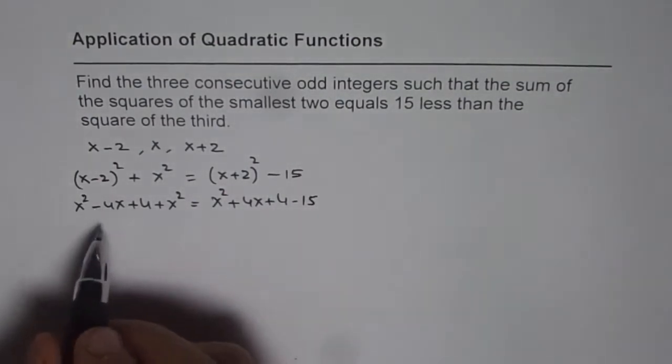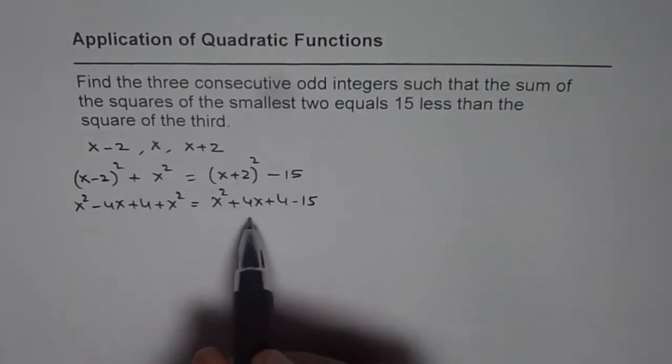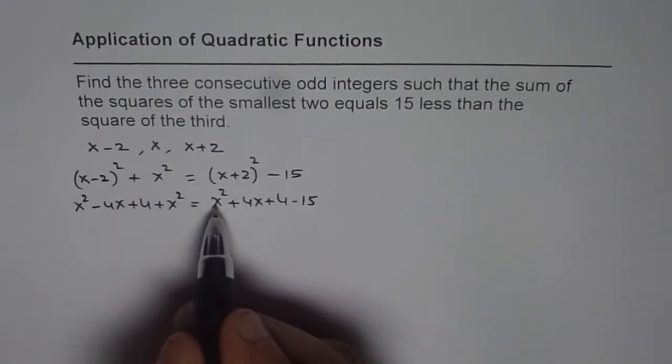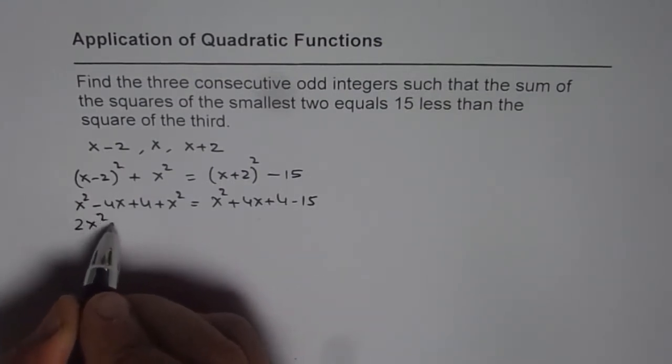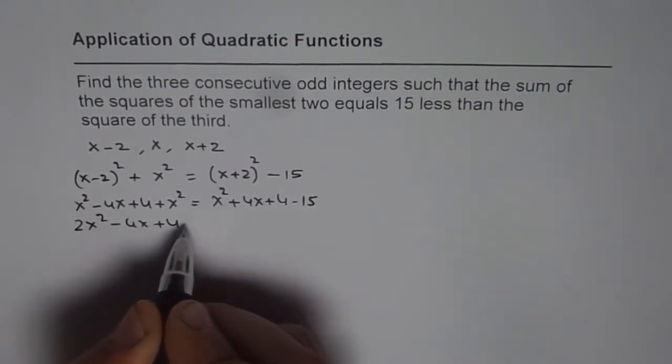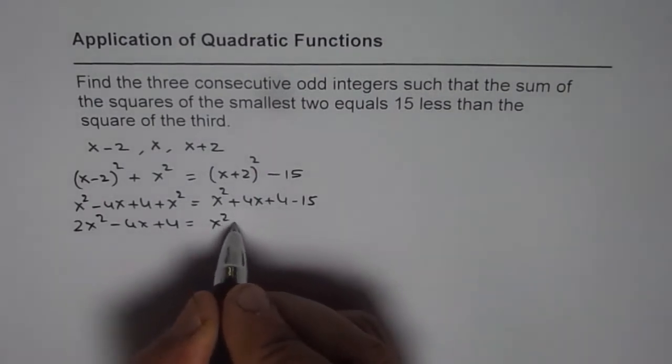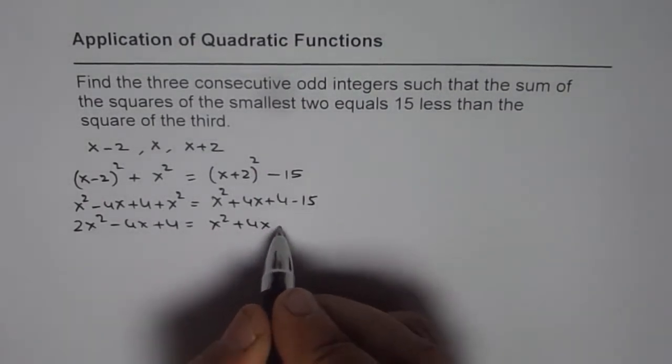That gives us, we can simplify. Let us combine these two first. 2x² - 4x + 4 = x² + 4x - 11.